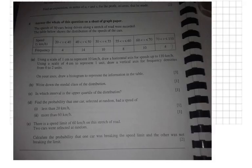What is going on? It says the speeds of 50 cars being driven along a stretch of road were recorded. So somebody's standing next to the road and is recording the speeds of, in total, 50 cars. The table below shows the distribution of the speeds of the cars. Before we start reading the actual questions, let's have a look at that table.